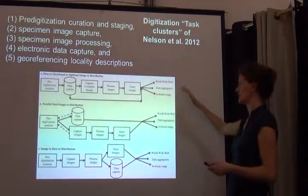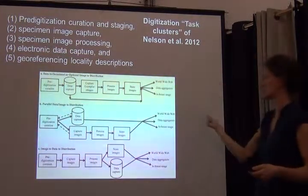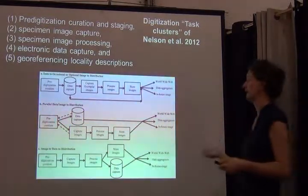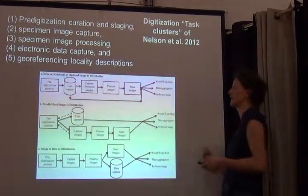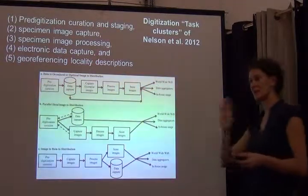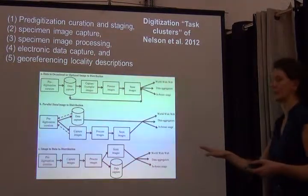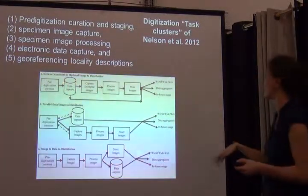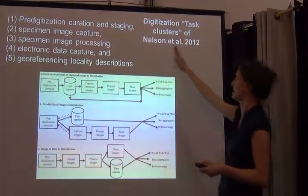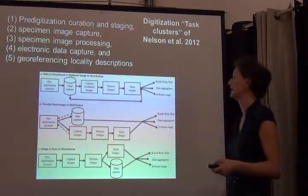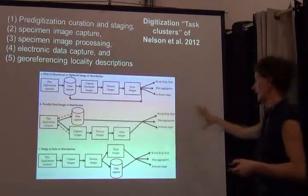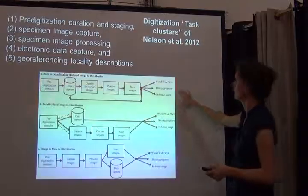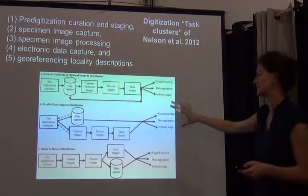They came up with five distinct clusters of things that typically happen during digitization: pre-digitization curation and staging of specimens; specimen imaging capture; specimen image processing; electronic data capture; and georeferencing locality descriptions. We'll have a full day of georeferencing on Saturday, and imaging will be covered tomorrow.